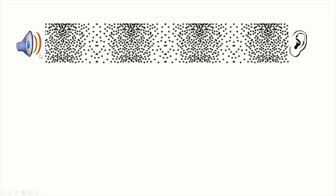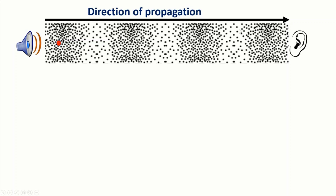So let's review. This is a speaker and this is a listener, and this is the medium between the speaker and the listener. This is a particle of the medium, and this is the direction of propagation of the wave. So even though the sound from the speaker to the listener is going to move from left to right, the particle in the medium is going to be moving back and forth.